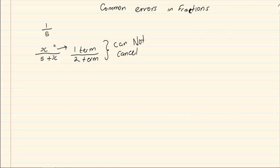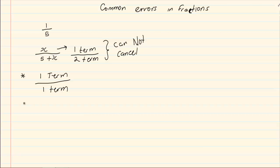Now how do we know when I can cancel and when I can't cancel? The basic rule is you must have one term over one term, but also it has to be the same.